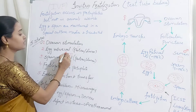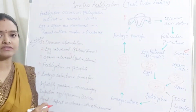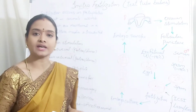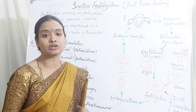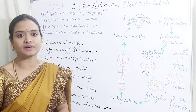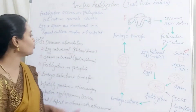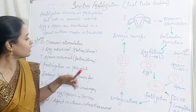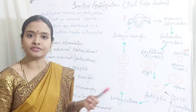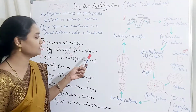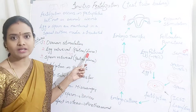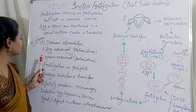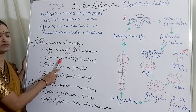In case the female partner has some defect in the egg — that means the egg quality may not be good, because of which fertilization fails — in that case they go for an egg donor, where eggs are taken from another female. That is called an egg donor. The third step is sperm retrieval.